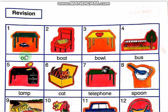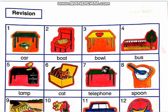The first picture is a car. This is a car. What is this? It is a car. What color is it? It is blue. It is a blue car. Where is the blue car? It is under the green table.